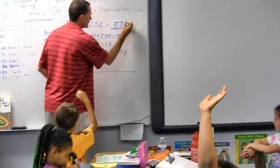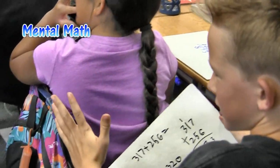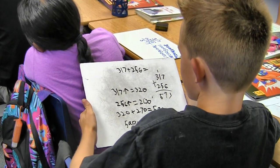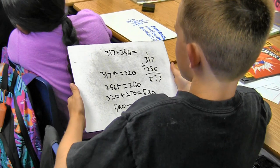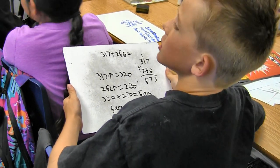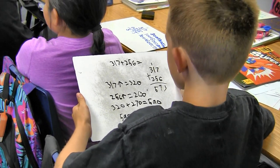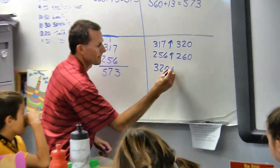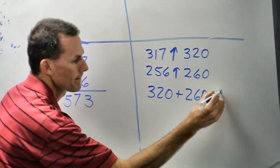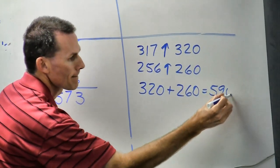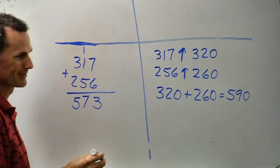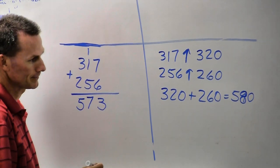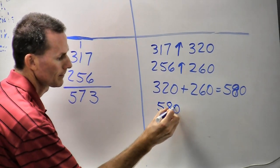And one more strategy. Different strategy. I did mental math. So I rounded 317 up to 320. Then I rounded 256 up to 260. And then 320 plus 260 equals 590. Oh no. 580.